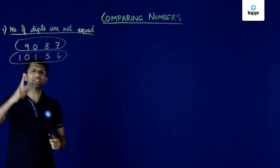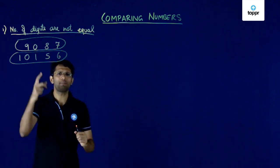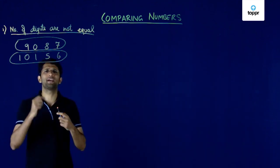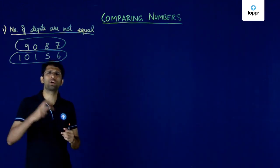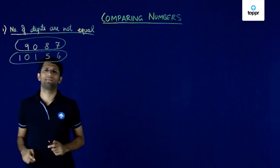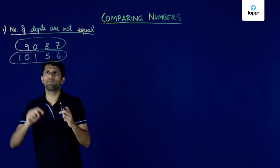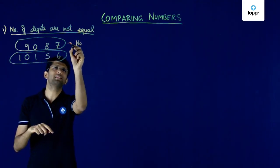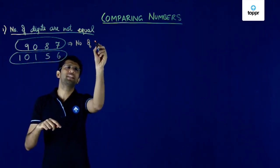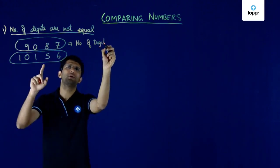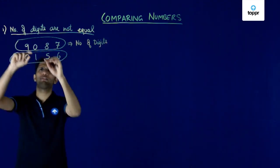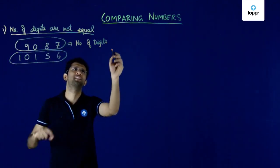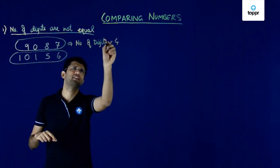Because these numbers are very big, we cannot plot them or write them on a number line and see which one is greater. So we will have to resort to other methods. If you count the number of digits in the first number, you will realize that it has 4 digits — so the number of digits in the first number is 4.